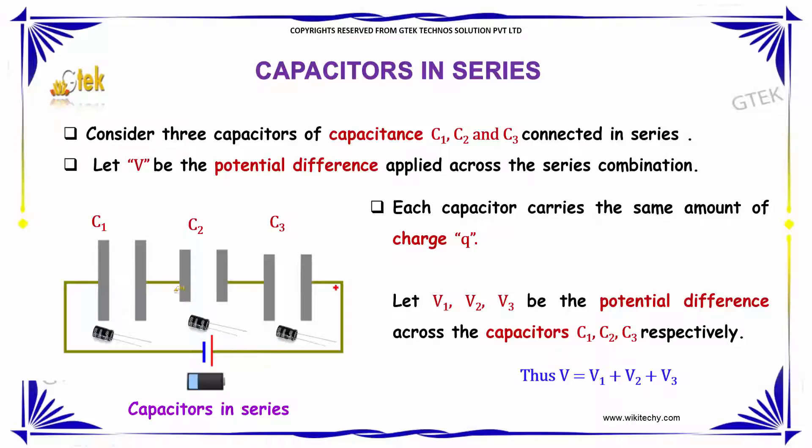Let V1, V2, and V3 be the potential differences across capacitors C1, C2, and C3 respectively. This can be expressed as the equation V = V1 + V2 + V3.